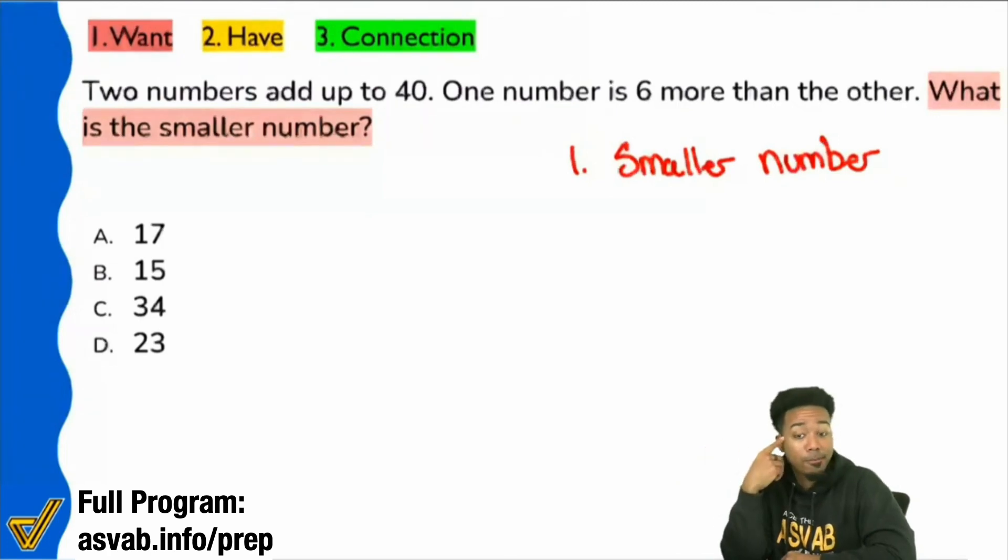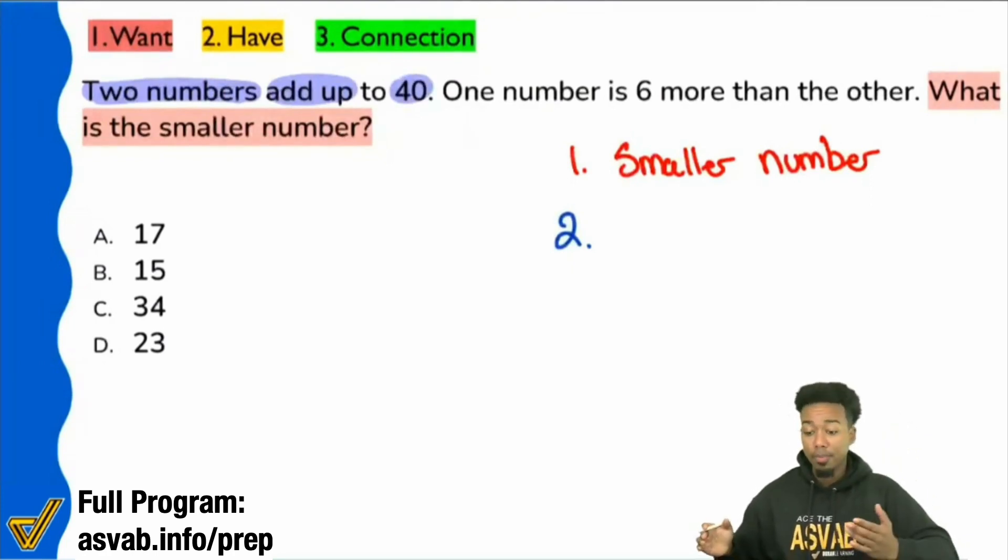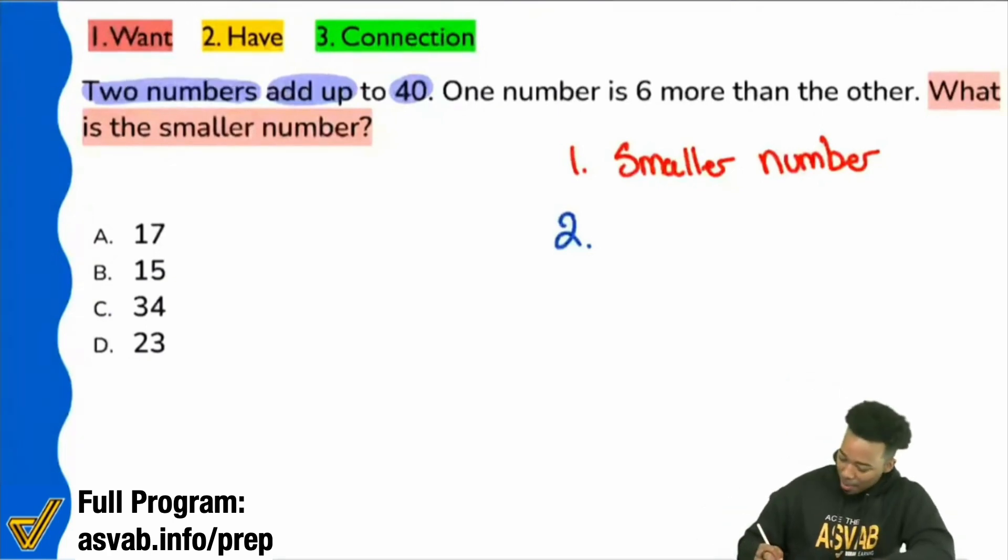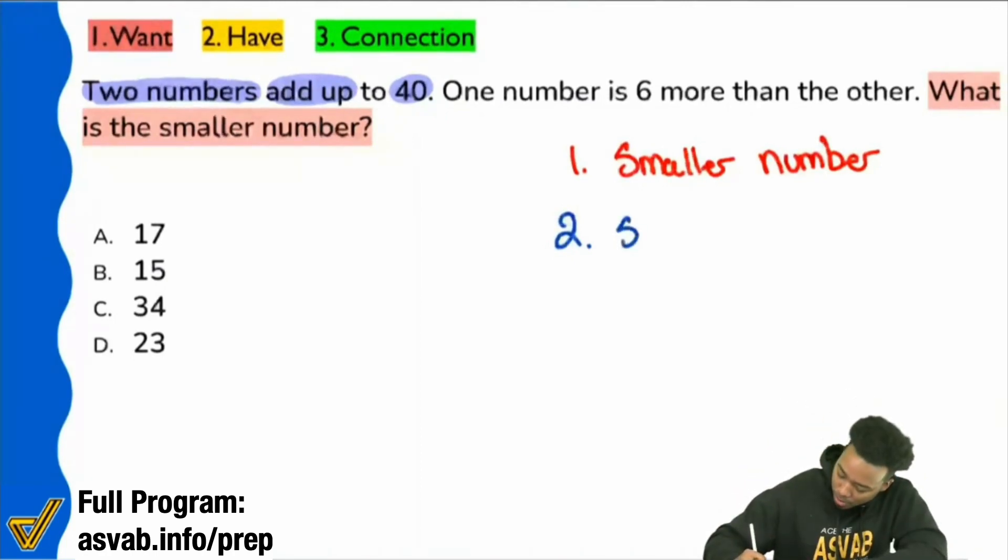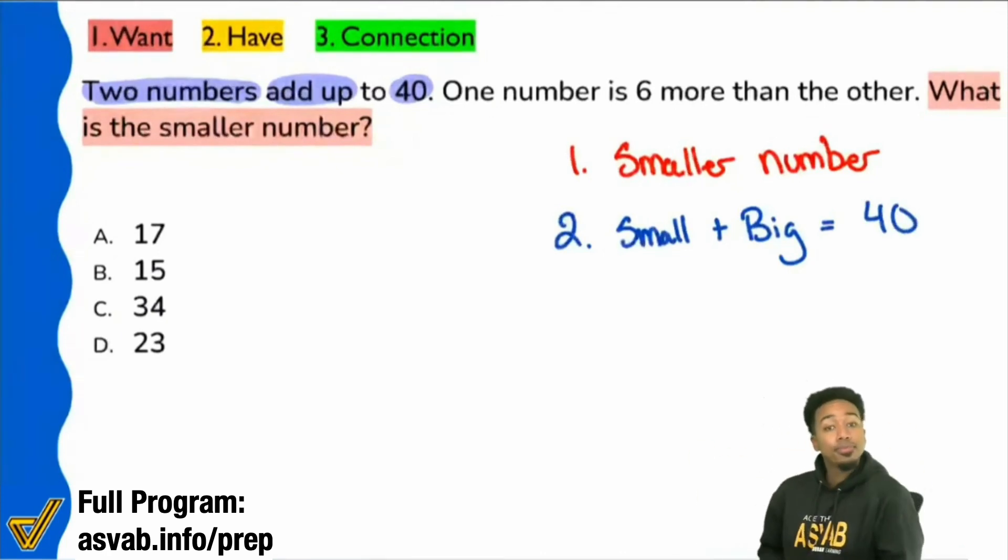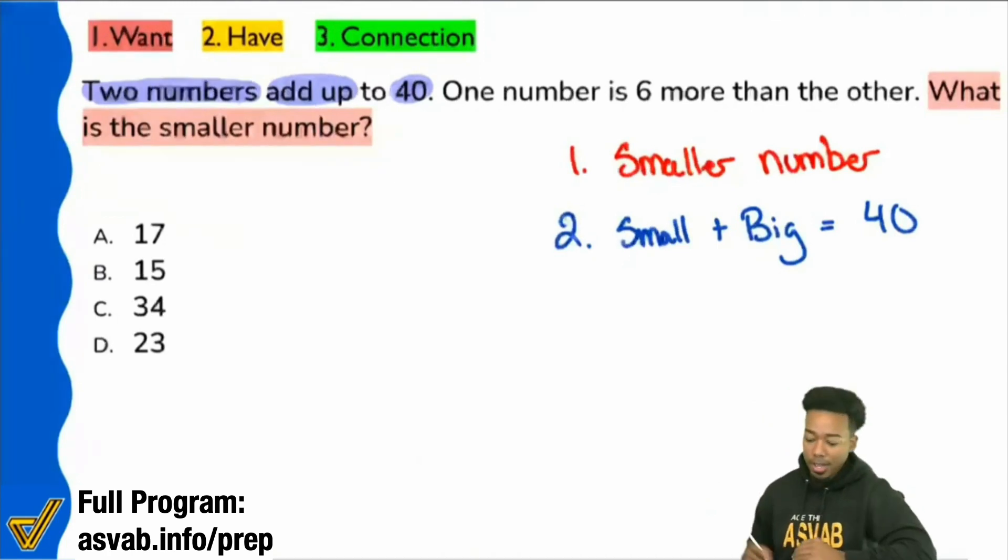Step two, what's the information I have? Let's see. Step two, information. I see that the two numbers add up to 40. Okay, my party people, my brain is now braining. So is it fair to say that what that means, if the two numbers add up to 40, is it safe to say that the small number plus the big number equals 40? Is it safe to say that?